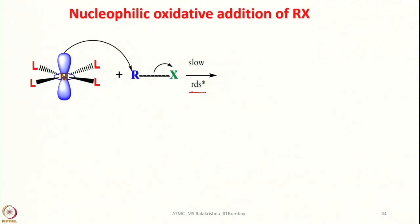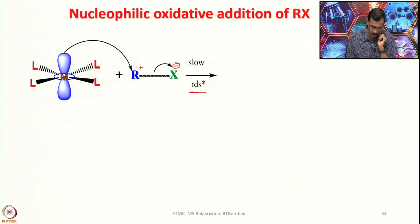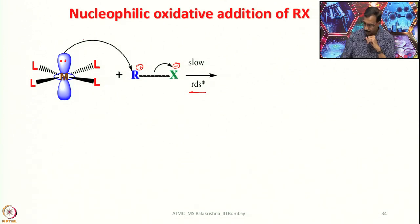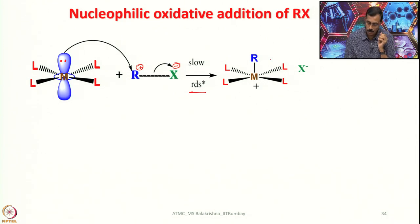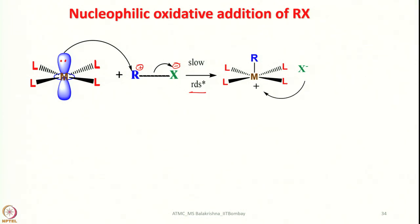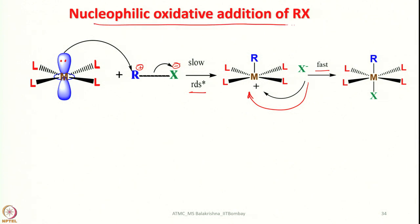Once the bond is polarized, charge moves and X becomes X⁻, then X⁺. When it is X⁺, it attacks the dz² orbital which holds 2 electrons on the metal. This generates a five-coordinated species with a positive charge and an empty metal orbital, since electrons have already been donated to the two ligands. Both ligands are anionic. Oxidative addition is thus halfway through, and the nucleophile attacks to complete the reaction in the next fast step — hence the name nucleophilic oxidative addition.